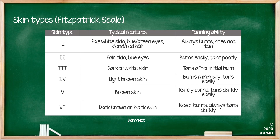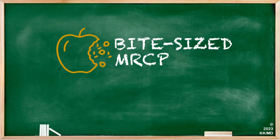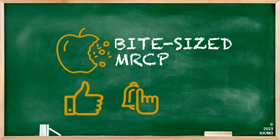Finally, skin type six is dark brown or black skin. These individuals never burn and always tan darkly. Thanks for listening to this episode of Bite Size MRCP. If you liked what you heard today, give us a thumbs up and hit the like and subscribe button to make sure that you don't miss out on our next episode. Let us know in the comments which topics you would like to hear in the future. See you in the next episode.